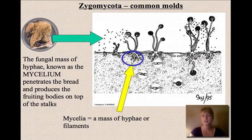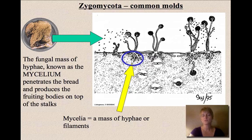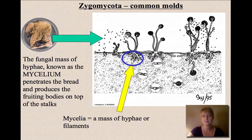The bread mold produces vertical hyphae that have spores on top. When those spores are released, they fall onto other parts of the bread and produce more mold. Bread molds also have horizontal hyphae, which are in the layer of the bread and are actually absorbing the nutrients from the bread.